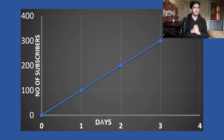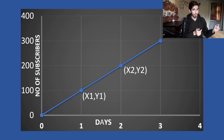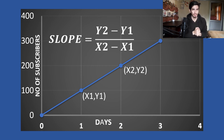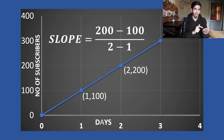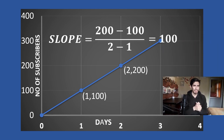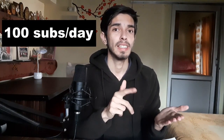This entity is called the slope of that line. The slope will tell us how fast something is changing with respect to something else. To find the slope of this line, we take two points and name them x1, y1 and x2, y2. Slope is simply y2 minus y1 upon x2 minus x1. For example, y2 is 200 minus y1 is 100, upon x2 is day 2 minus day 1. The answer is 100 divided by 1, which is 100. This tells us the channel is getting 100 subscribers per day — that is the information we get from y2 minus y1 upon x2 minus x1.